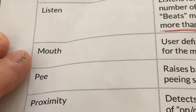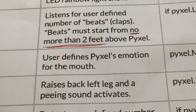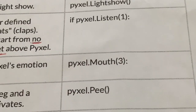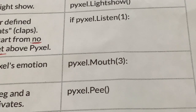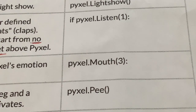So the first one is mouth — the user defines Pixel's emotion for the mouth, and the code is pixel.mouth, with an example of three in the brackets. I noticed there's a colon after the brackets, but I think that was a mistake because I didn't put a colon in and the code worked. It's not a conditional, so I think they've just done that by accident.